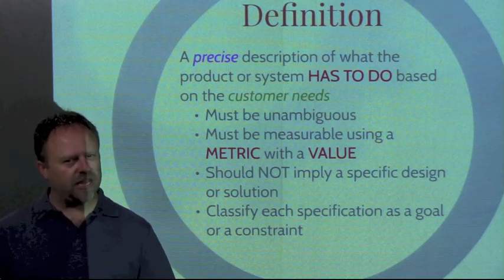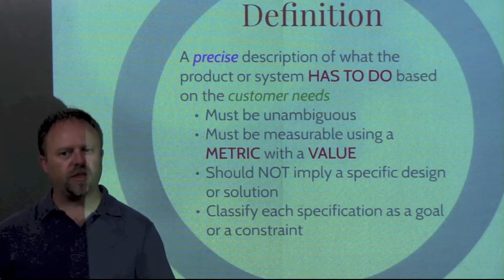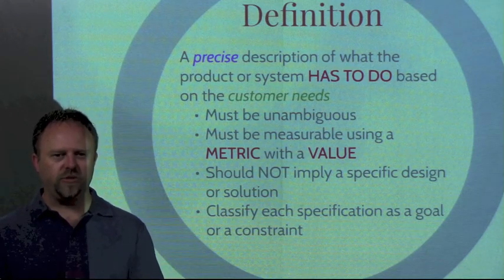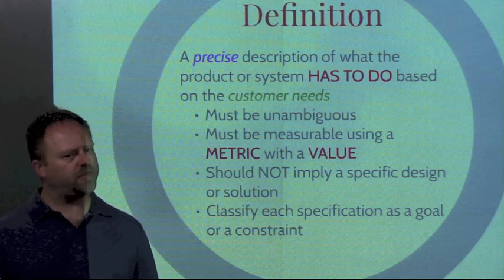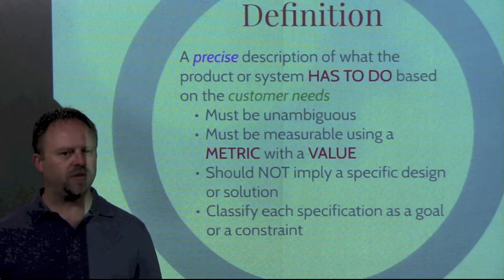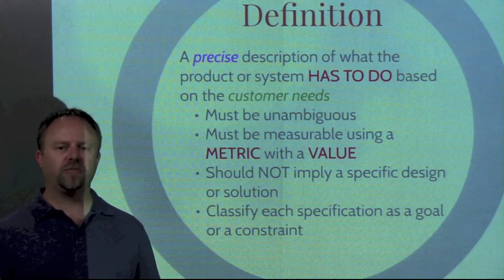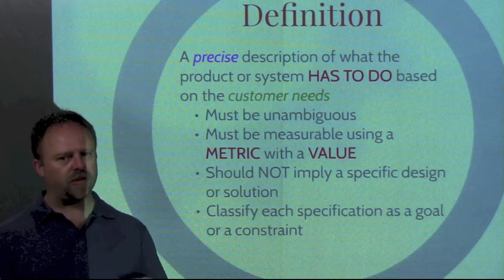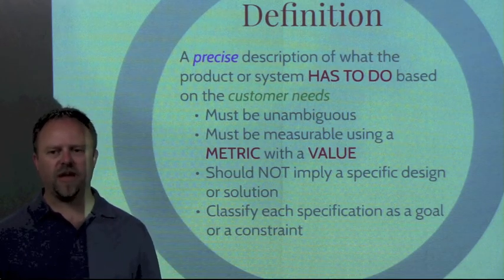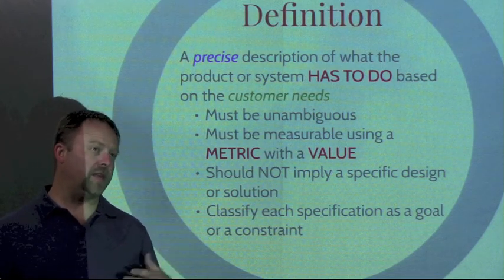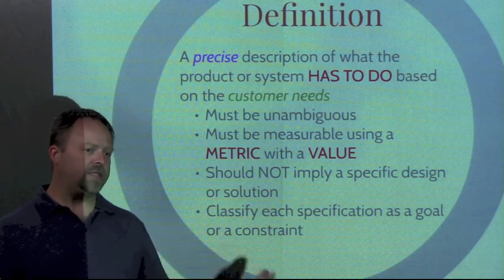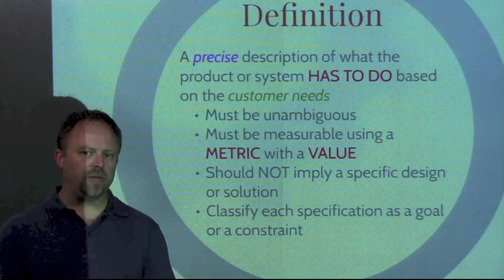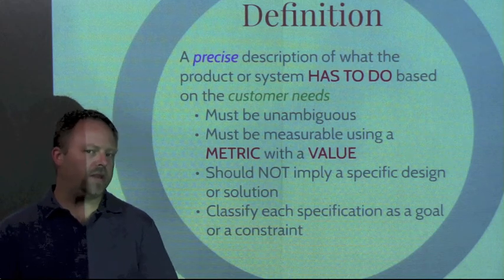We want to make sure it's clear — everyone understands what the specification is talking about. We want to make sure we're using language that includes a metric, something that's measurable, something we're going to be able to check and determine if we're meeting the target value. So we need a metric, something to measure, something to value — like a size, a power requirement, or maybe a weight.